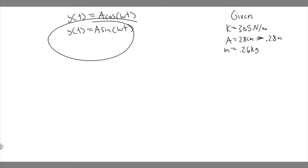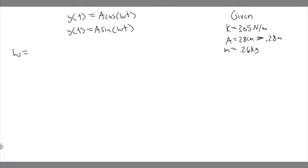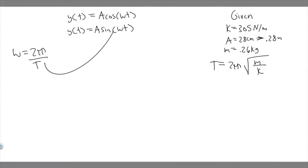We want to solve this equation with the variables we're given. We have A, but we're not given omega, so we need to solve for it. Omega equals 2π over T, where T is the period. We can solve for the period using our given variables. The formula is T equals 2π over the square root of m times k — or more precisely, 2π times the square root of m over k.